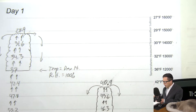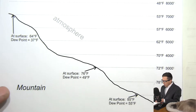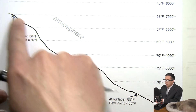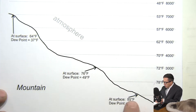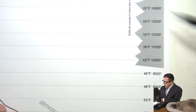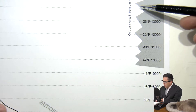Now let's go to Day 2 — on the second page of the handout. The setup here has the bottom part almost the same: the conditions and temperatures down here are the same. The only thing that's changed is we've brought in some colder air aloft — cold air that's come down from the north — and we're going to see how that changes things.